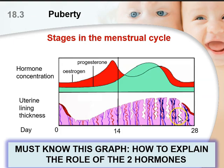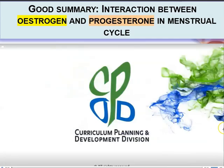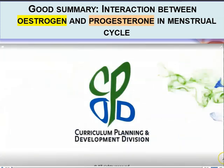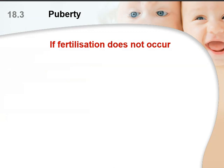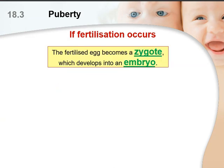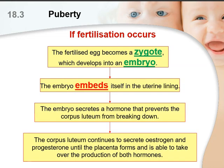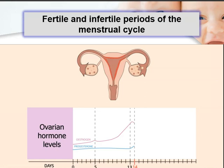For today's lecture, we are going to look at what happens after fertilization. We spoke about what happens if fertilization does not occur, and also what happens if fertilization does occur — you can go back to the previous lecture for a recap. Today we're going to talk about the fertile and infertile periods of the menstrual cycle. A student actually asked: when is the fertile period? Is it only after ovulation, or what about the other days when the lady has her menses — is she fertile or infertile? Let's watch a short snippet first.